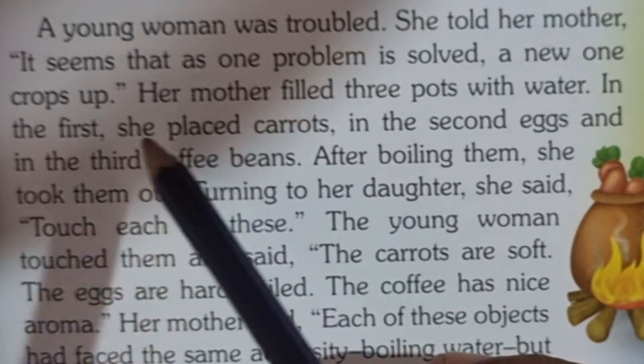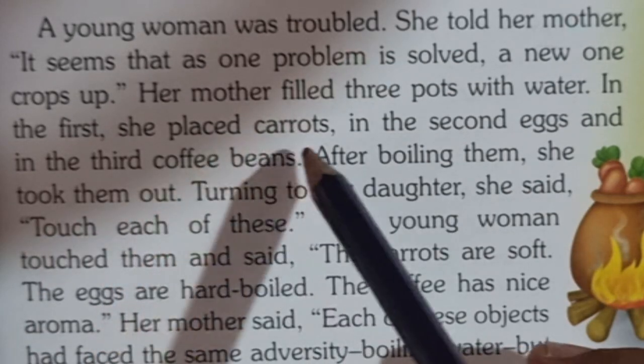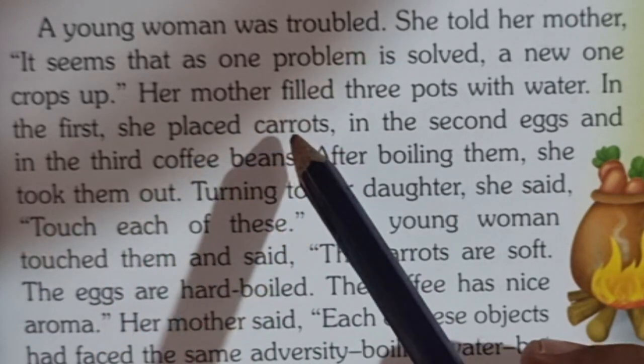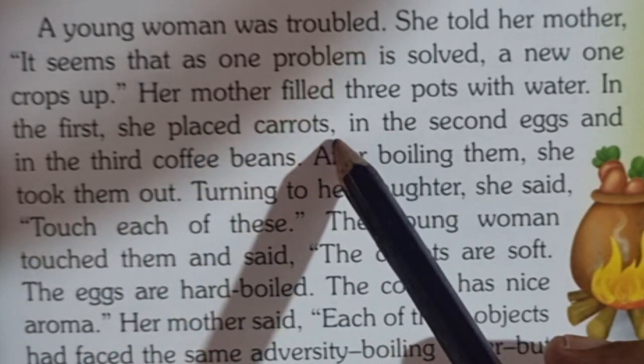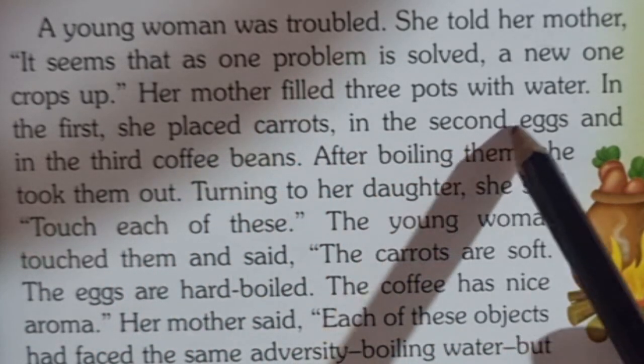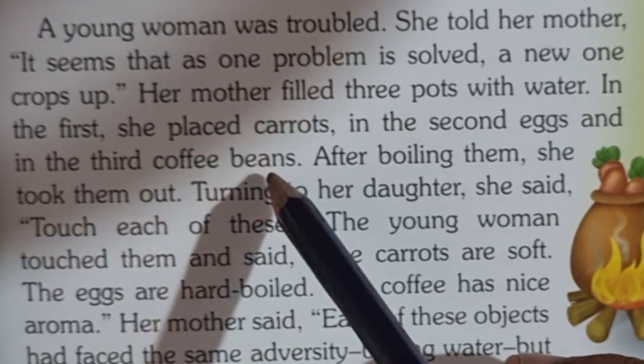So, this sentence describes what happened. It is called past tense — past simple. In the first pot: carrots; in the second: eggs; and in the third: coffee beans.